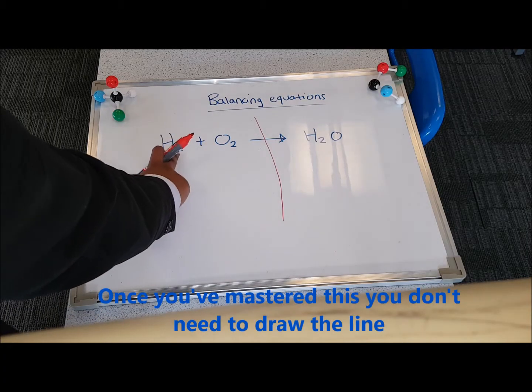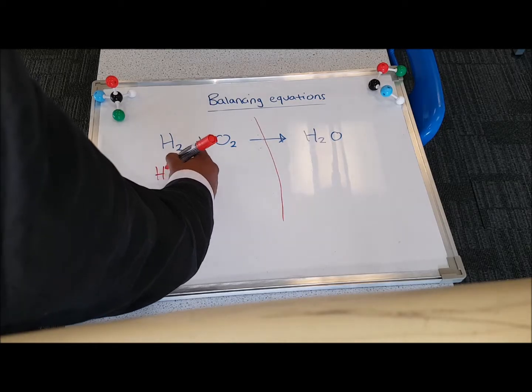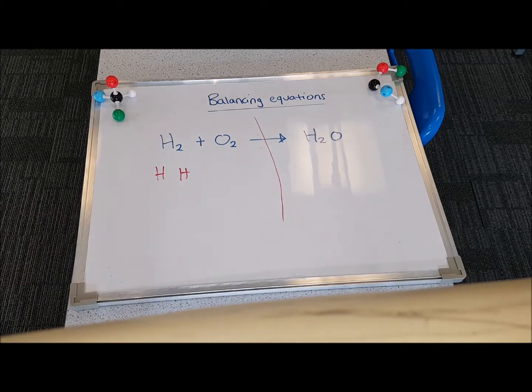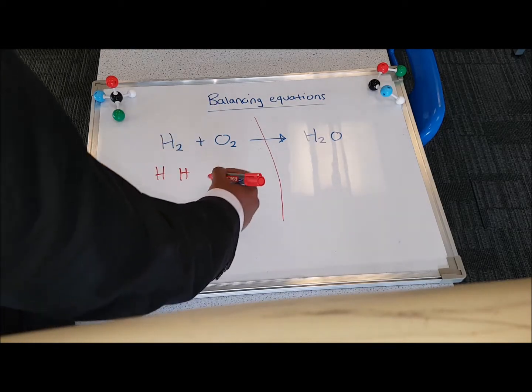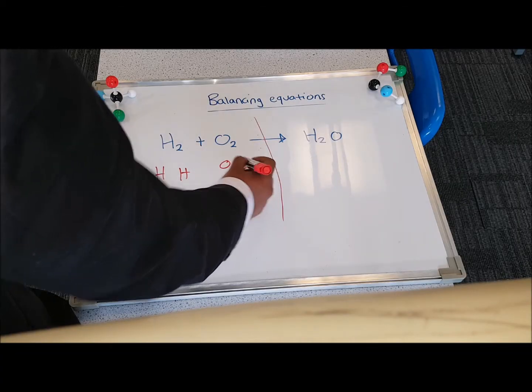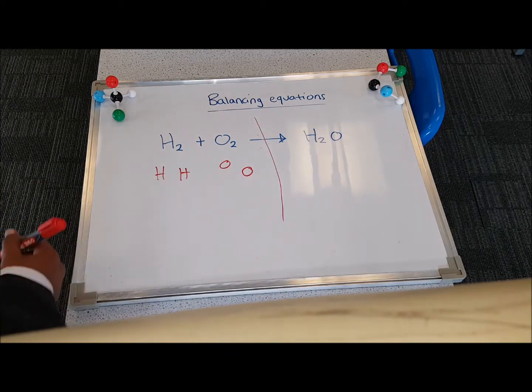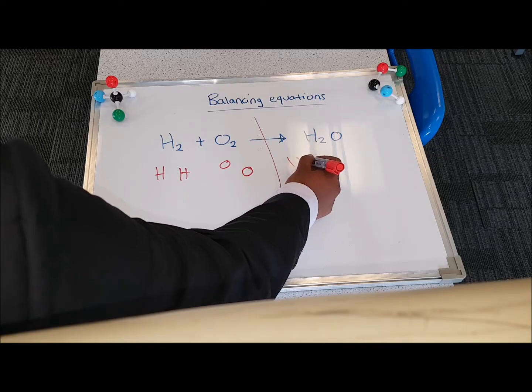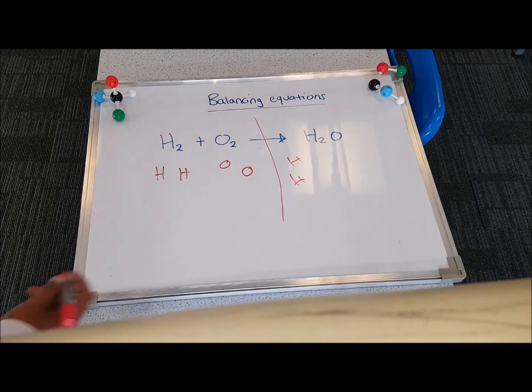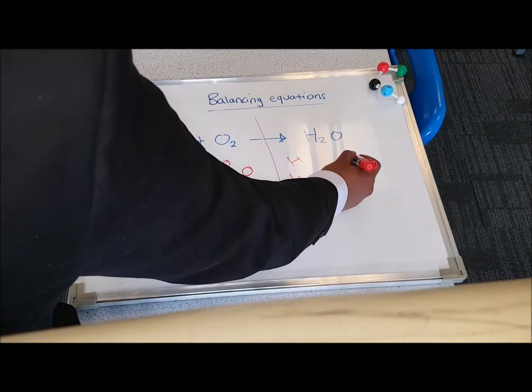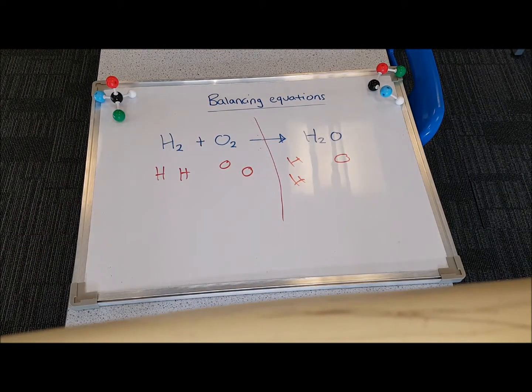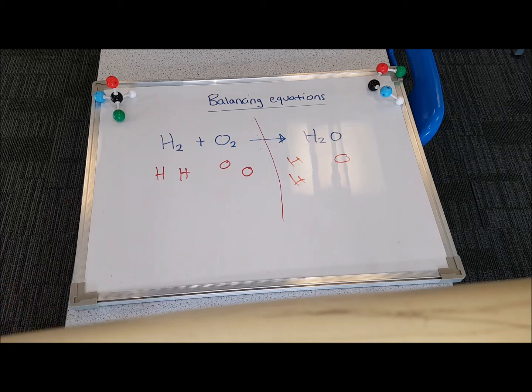Here, I've got two hydrogens. The little two means that there's two hydrogens. I've also got two oxygens on the left. On the right-hand side, I have got two hydrogen and one oxygen. Now, you can see the number of atoms on the left and the right are obviously unbalanced.